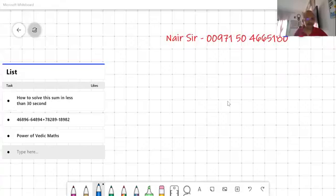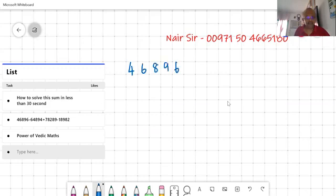I've got a sum and I want to see how I can solve this sum in less than 30 seconds. How do I do it? Let me just write it down. 4689, 64894, 78289, 189.